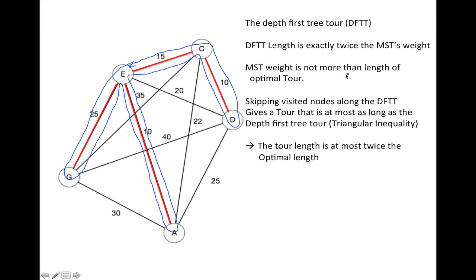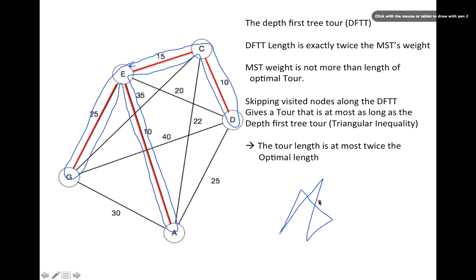The minimal spanning tree weight is not more than the length of the best tour. Suppose we have some best tour — if we erase one of its edges, we have a spanning tree. That spanning tree cannot be shorter than the minimal spanning tree. So the minimal spanning tree weight is no more than the length of the optimal tour. That means the length of this depth-first tree tour is at most twice that of the optimal tour.